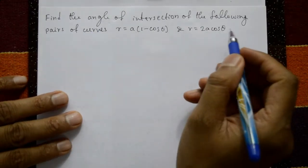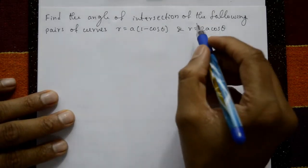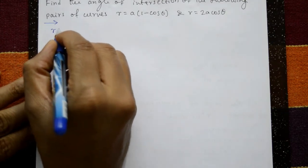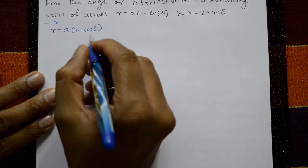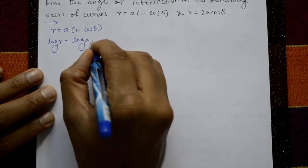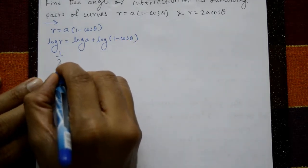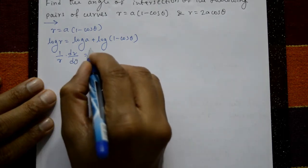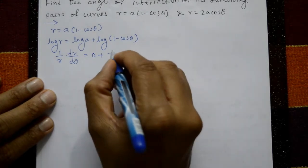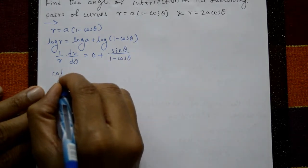Find the angle of intersection of: R = a(1 − cosθ) and R = 2a cosθ. For the first curve, taking log on both sides: logR = logA + log(1 − cosθ). Differentiating with respect to θ: (1/R)·(dR/dθ) = sinθ/(1 − cosθ), and this equals cotφ₁.